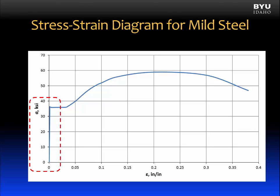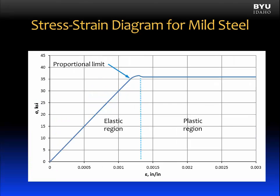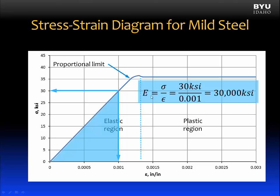We want to focus in on that early part of the stress-strain diagram where the behavior is linear. As discussed in the previous lesson, the modulus of elasticity is the slope of the linear portion of the stress-strain curve in the elastic region. We found the slope by picking a point along the linear portion of the curve, finding its stress and its corresponding strain, and we calculated the modulus of elasticity, or Young's modulus, as the rise over the run — stress over strain. This relationship that relates stress and strain to a constant is known as Hooke's Law.